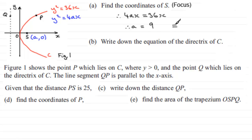So it follows then that the coordinates of S, which are normally (a, 0), well, a is now 9, so it's going to be (9, 0).